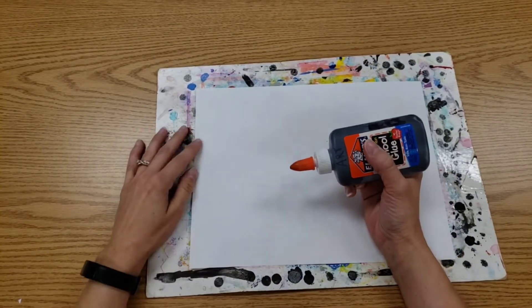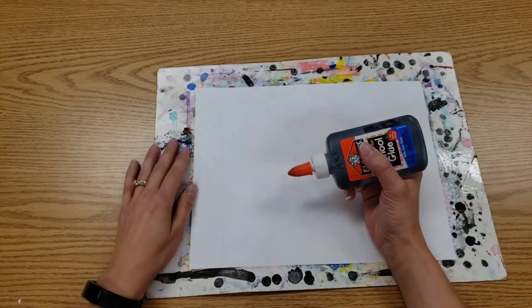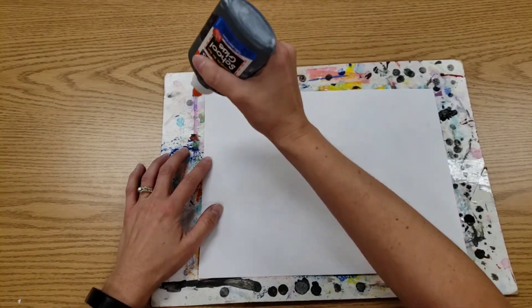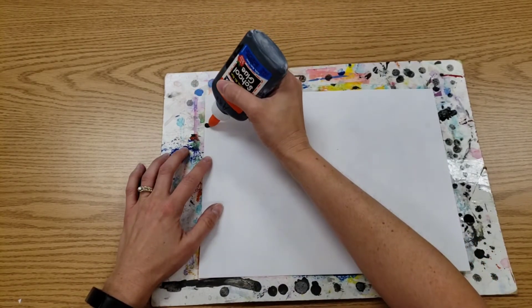We're going to use the black glue to decorate the paper with a lot of curvy lines, loopy lines. So I'm shaking it a little bit to make sure the glue is coming out.